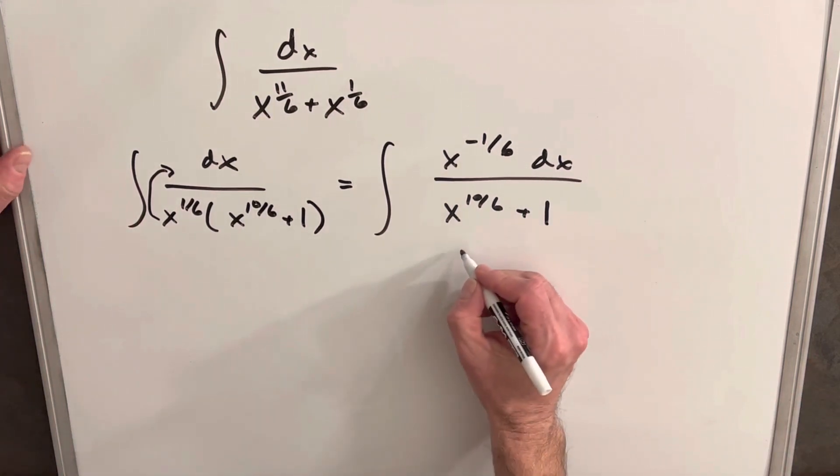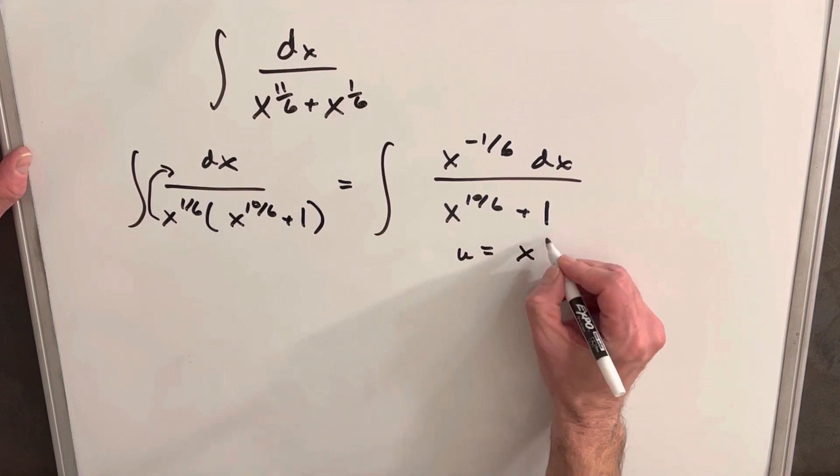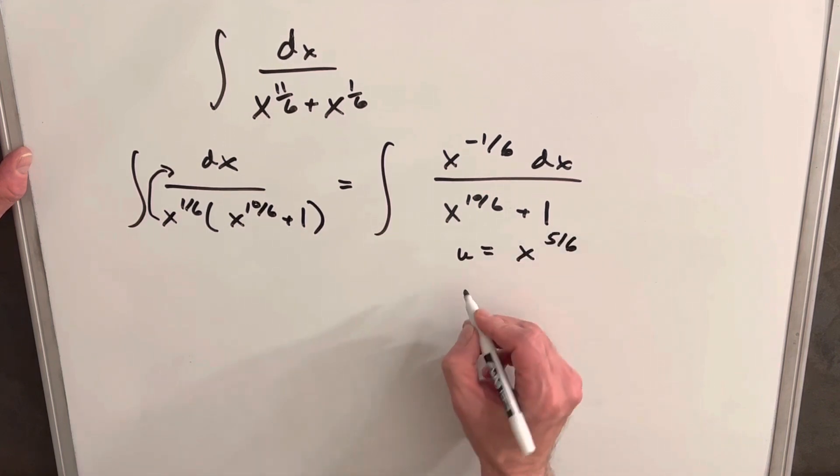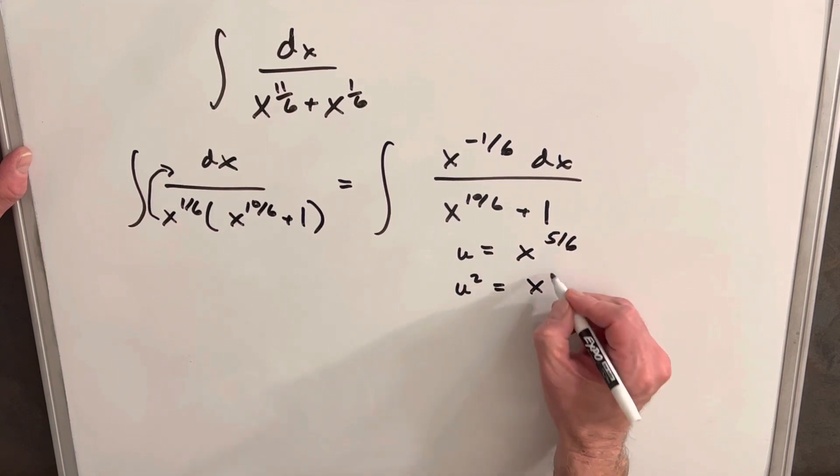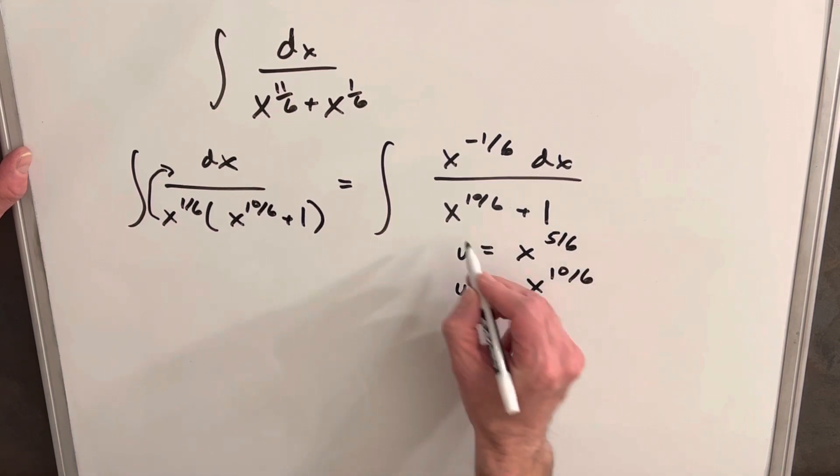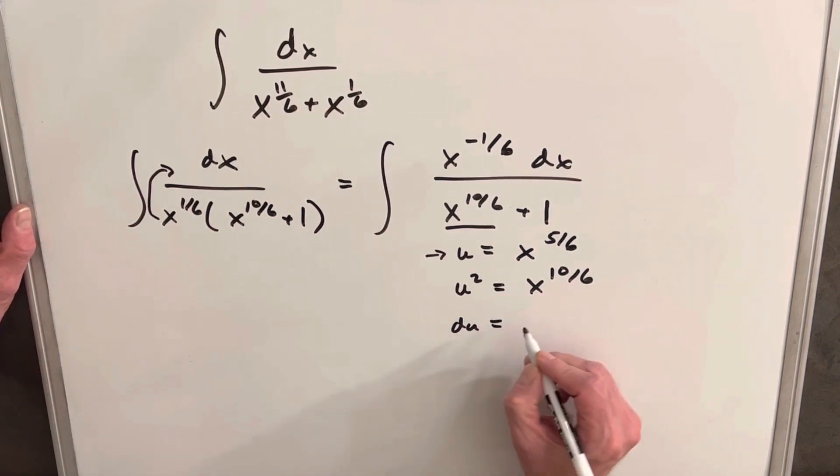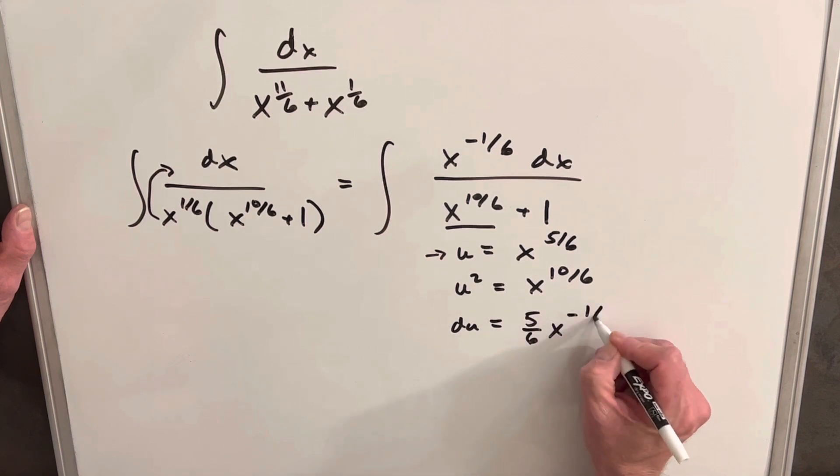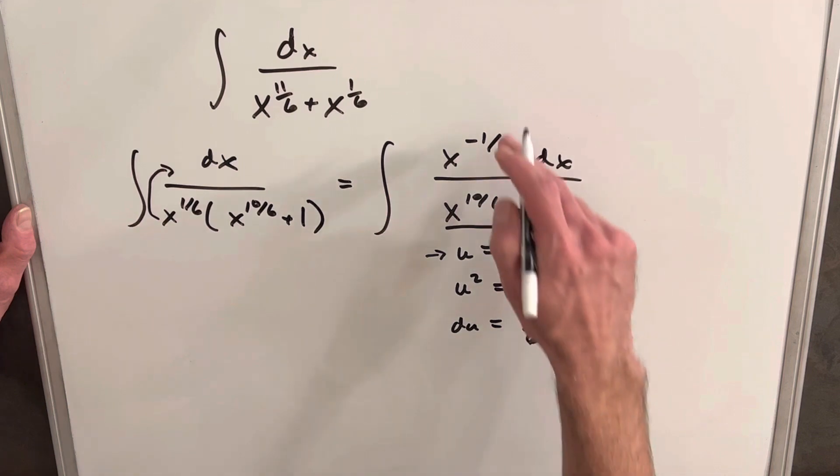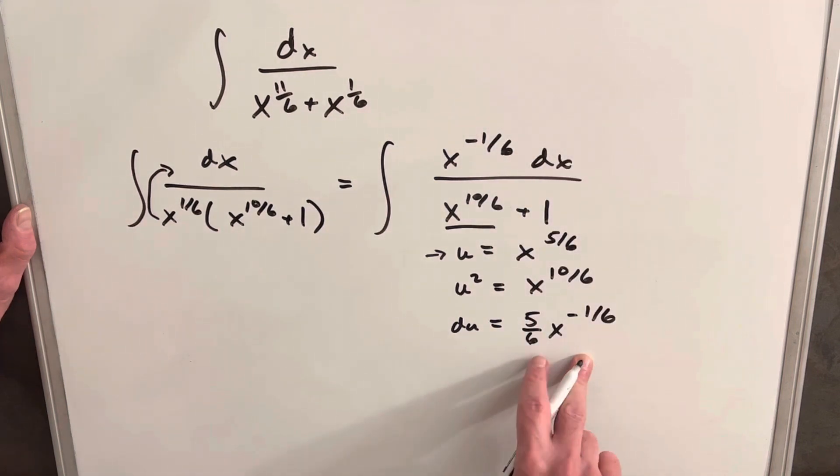So instead, what I'm going to do for my u substitution, we'll use x to the 5 over 6, and that's because just notice that u squared is going to be x to the 10 over 6, which is this term right here. Then let's just find our du. So taking the derivative here, we get du equals 5 over 6 x to the minus 1 over 6. That's good. We get the same exponent here, so this is going to work out nice.